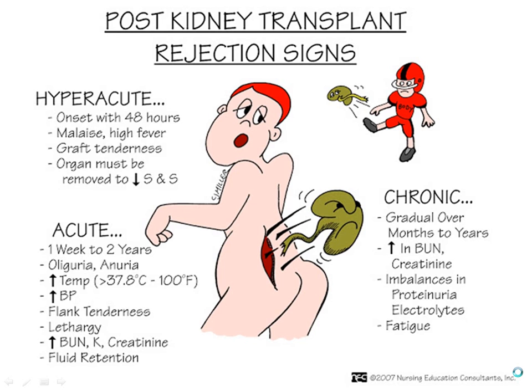Acute rejection may occur up to two years post-transplant. The patient would experience signs of renal disease: oliguria, anuria, fever, rising blood pressure, and rising BUN, creatinine, and potassium.